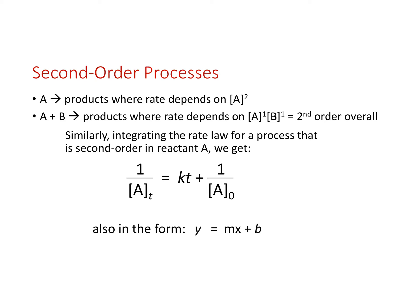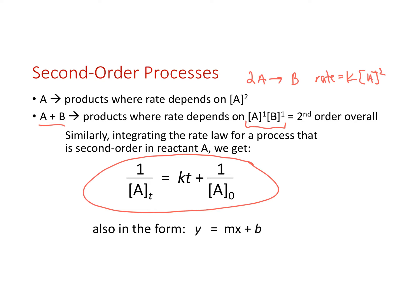A second order reaction can look like two different types. We could have 2A goes to B, where the rate law is rate equals the rate constant times the concentration of A squared. Or we could have A plus B goes to C, where it's first order with respect to A and first order with respect to B — overall a second order reaction. Integrating that data gives an integrated rate law in the form of y equals mx plus b: 1 over concentration at time t equals the rate constant times time plus 1 over the initial concentration.